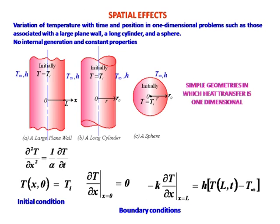Now let us focus on spatial effects. We are taking convective boundary conditions — maybe it is a plane wall, maybe it is a long cylinder, maybe it is a sphere. Many syllabi do not contain spatial effects, but it is nevertheless quite interesting to study them. There are two approaches to solve this problem; most syllabi involve Heisler and Grober charts, but it is a good idea to see how those charts are generated.